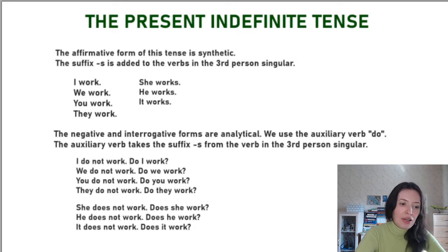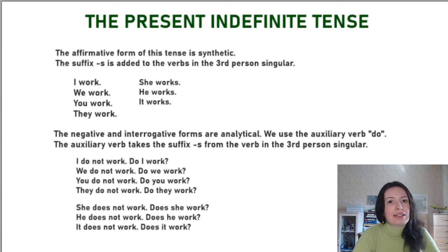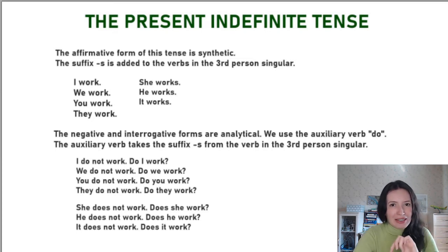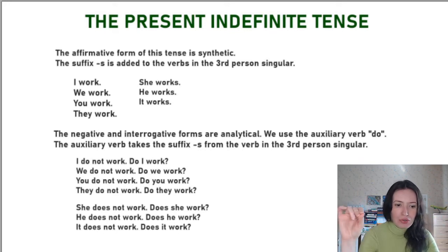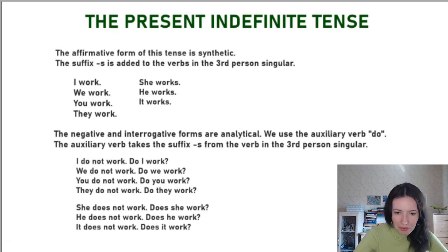And then in the general question 'do I work?', 'do' is the auxiliary verb, 'I' is the subject, and 'work' is the notional verb. So 'do' and 'work' are both part of the predicate — 'do' is the grammatical part and 'work' is the lexical part. This is why we call this form analytical: analysis is division into parts, and we divide all the meanings into two parts here.